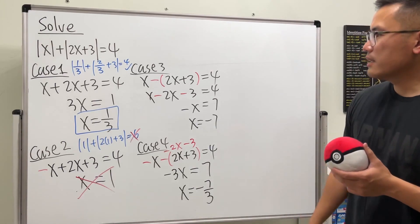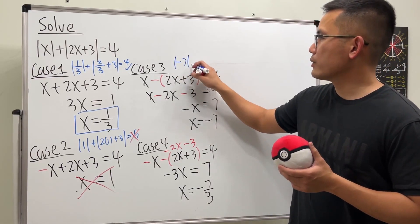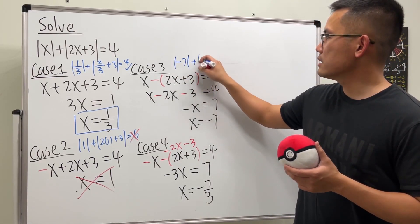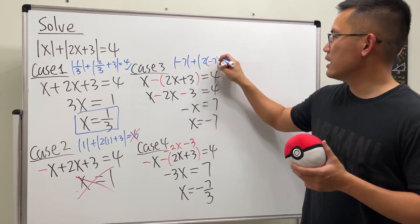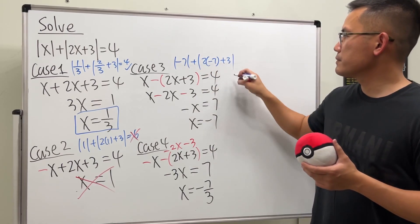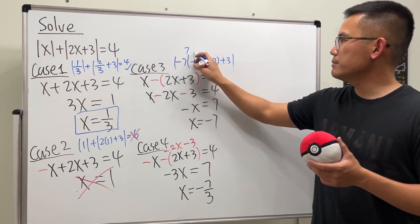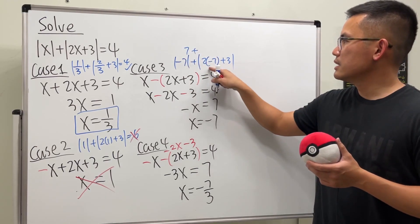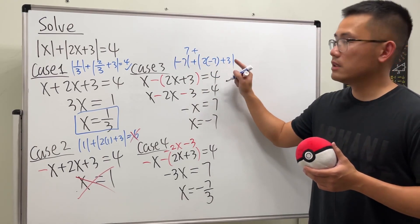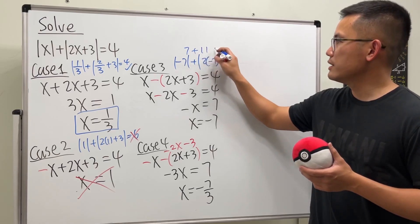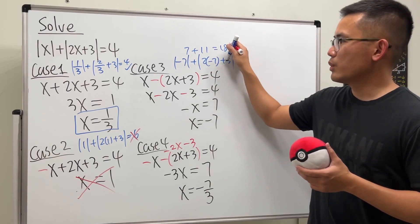Case 3 — plug in x = negative 7: we get absolute value of negative 7 plus absolute value of 2 times negative 7 plus 3, which is 7 plus absolute value of negative 14 plus 3, giving 7 plus 11 equals 18. That's not 4, so x = negative 7 is not a valid answer either.